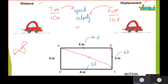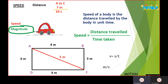Both units are the same — meter per second. Speed is denoted by V, and its formula is V equals S over T, where S is the distance traveled and T is the time taken. Speed of a body is the distance traveled by the body in unit time. The unit is meter per second.